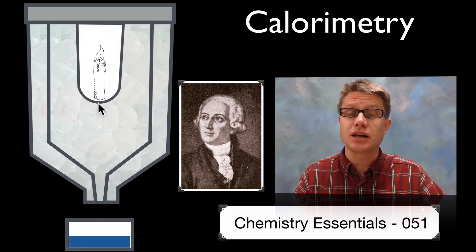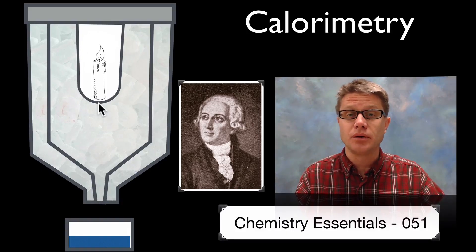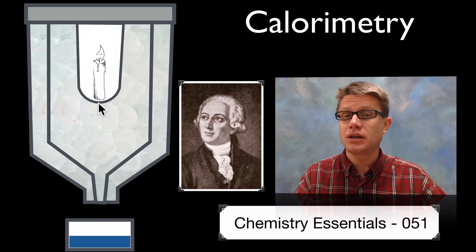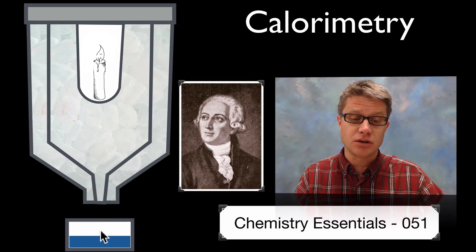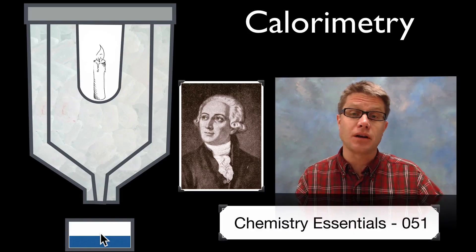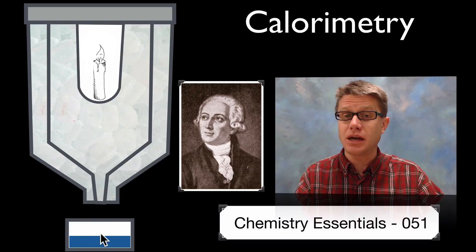And then he would put something inside the calorimeter—a candle for example. And what would happen is it would generate heat as it's doing combustion. It would melt the ice around it. That ice would turn into a liquid which he could measure. So he could measure the amount of energy that's being released from the candle.